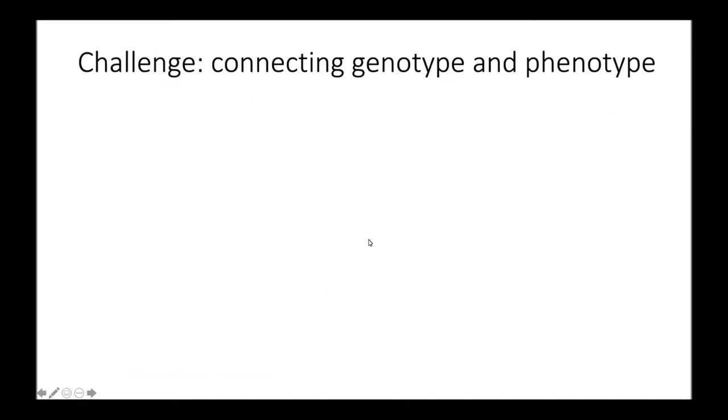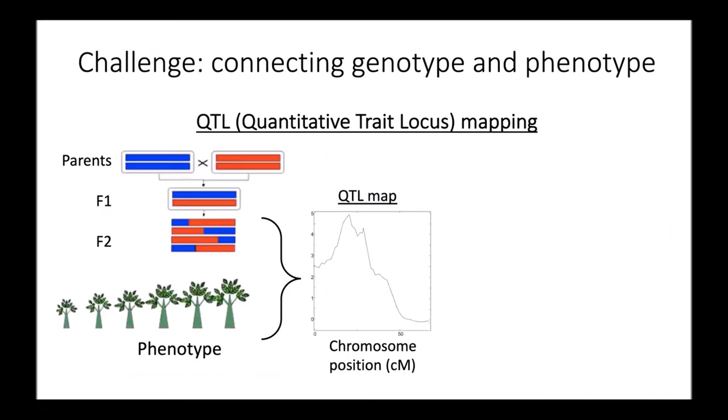The main challenge in this field is how to connect variation in genotype to phenotype. The most widely used method to do this is QTL mapping. It's a nice method because it's very widely applicable — pretty much any trait that differs between strains or species that you can breed together can be investigated with QTL mapping.